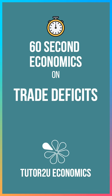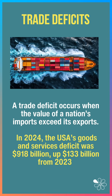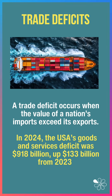60 seconds on trade deficits. A trade deficit happens when the value of a nation's imports is greater than its exports. For example, in 2024, the USA's goods and services deficit was over $900 billion.